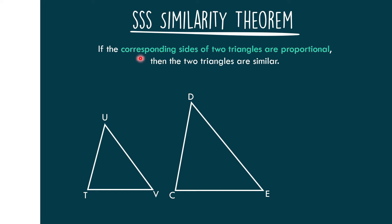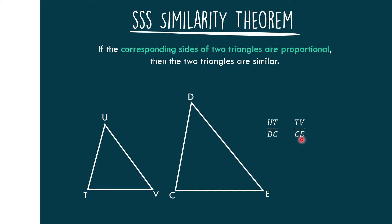Let's get the corresponding sides of these triangles — those corresponding sides should be proportional. Let us find the corresponding sides. Let's say that UT corresponds to CD; therefore, the ratio will be UT over CD. Next, we have AB that corresponds to CE; therefore, our ratio will be AB over CE.